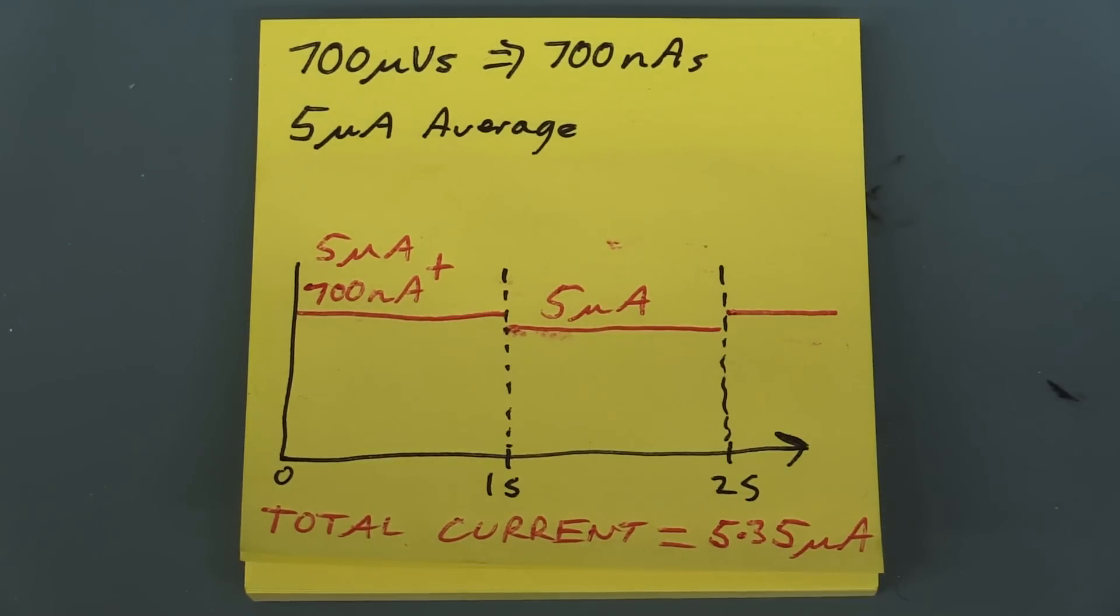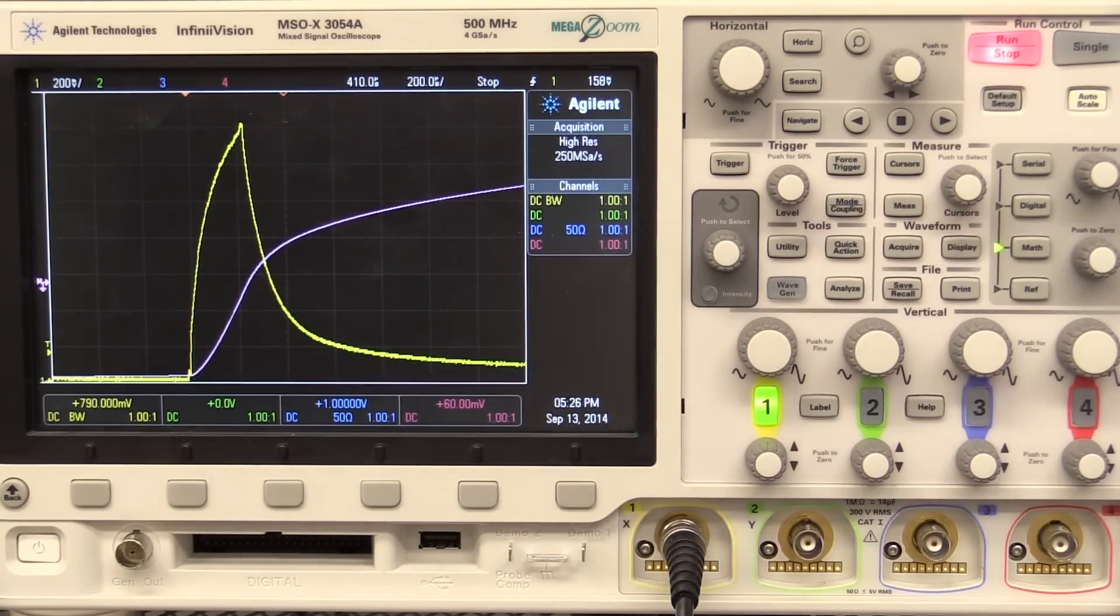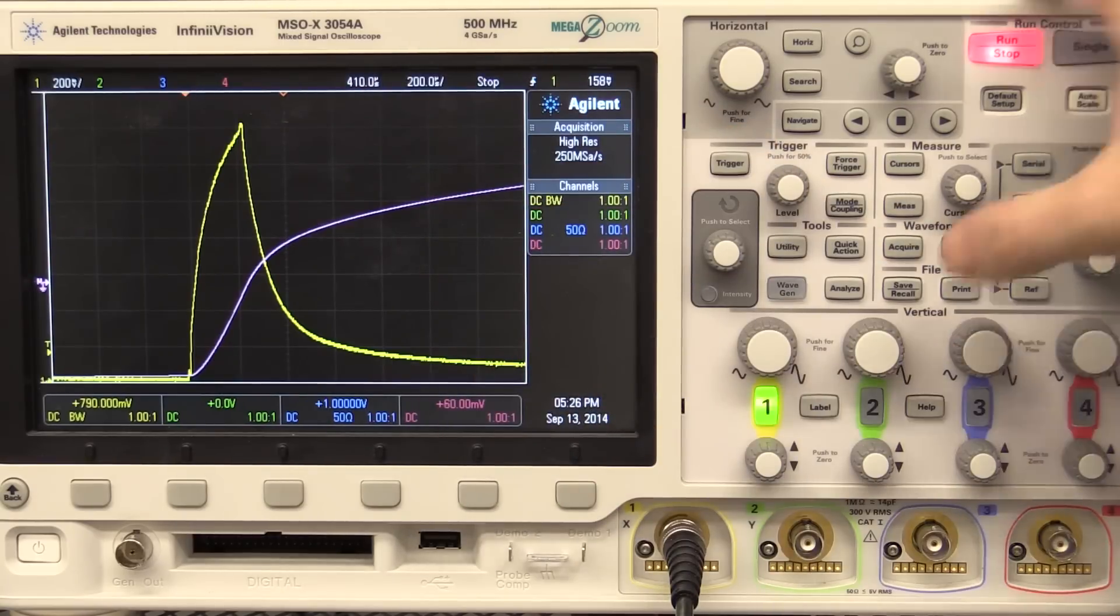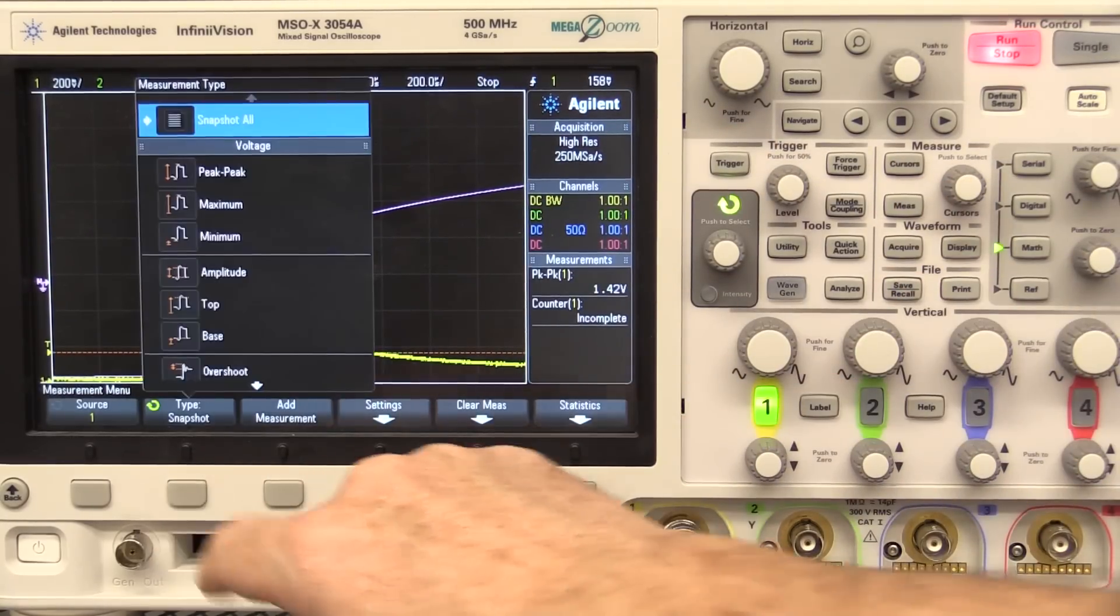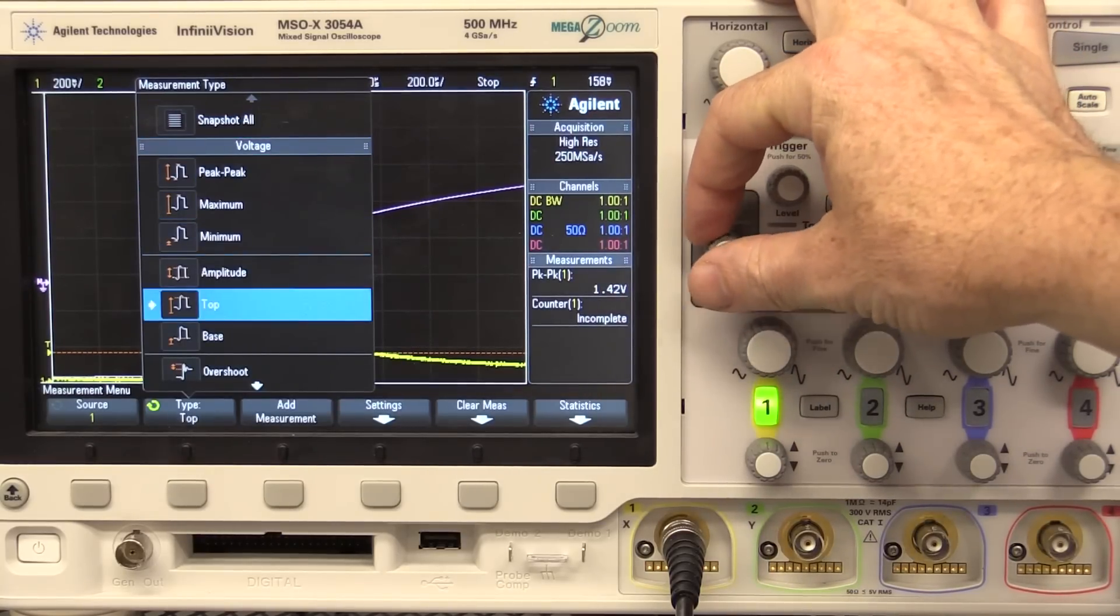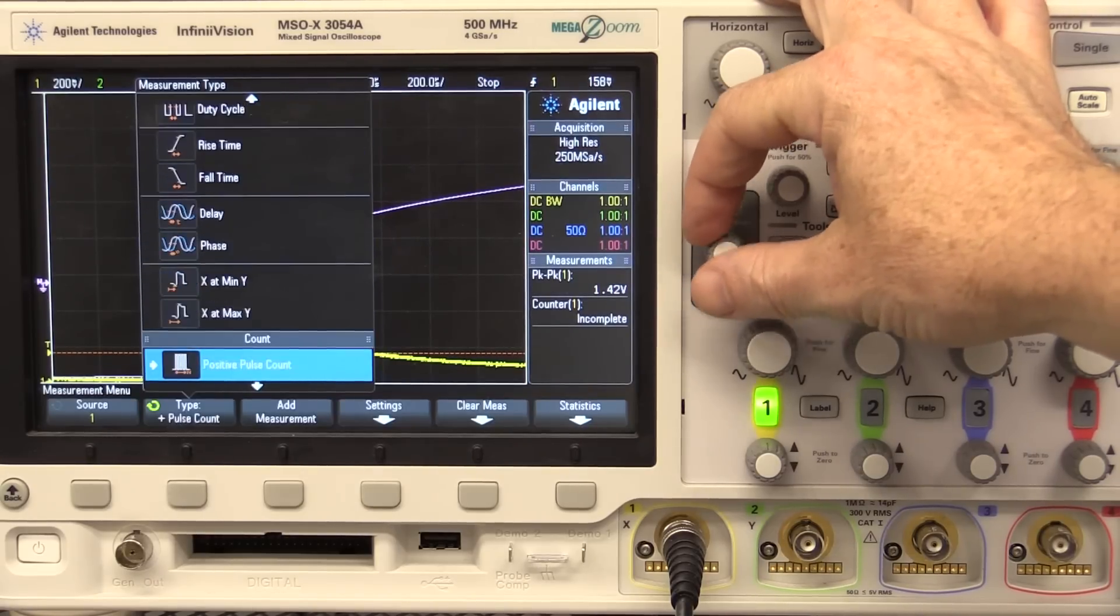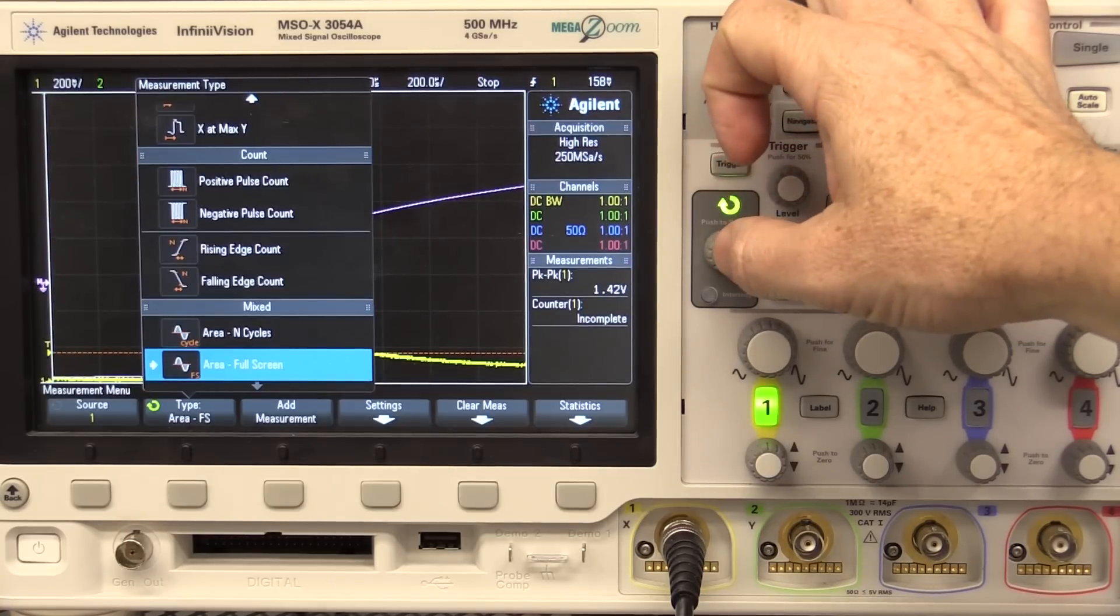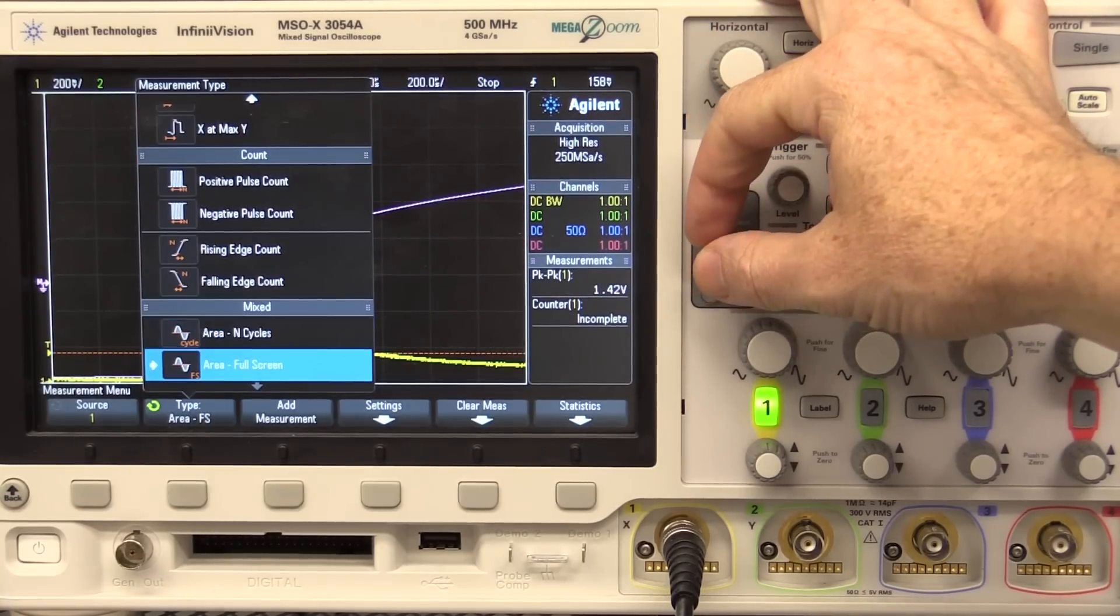Now I've shown you how to do this using the integration function, math function here. But as it turns out, this Agilent X series actually has a measurement function, not a math function, but a measurement function. If we go in there and you're used to all these, you can measure your peak to peak maximum amplitude, average, RMS, all that sort of jazz. If you go right down here, check this out, look, area over the full screen. Look at that, area over number of cycles or area over full screen. So area over the number of cycles would basically give you an instant readout of the total power consumption of your microcontroller if you had the dynamic range, as I said.